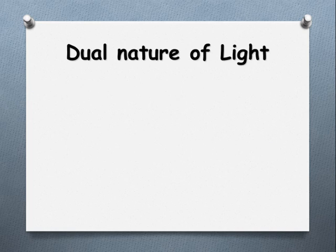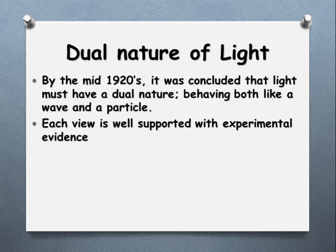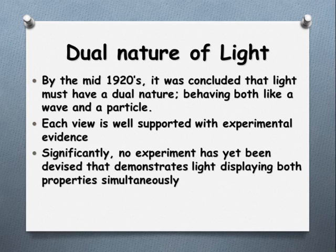So based on these findings, what else can we conclude about light other than it has a dual nature? That it's behaving both as a wave and as a particle. Okay, there's experimental evidence that supports both these views. But what I guess is perhaps most significant is that no experiment has ever shown it to behave as both at the same time.